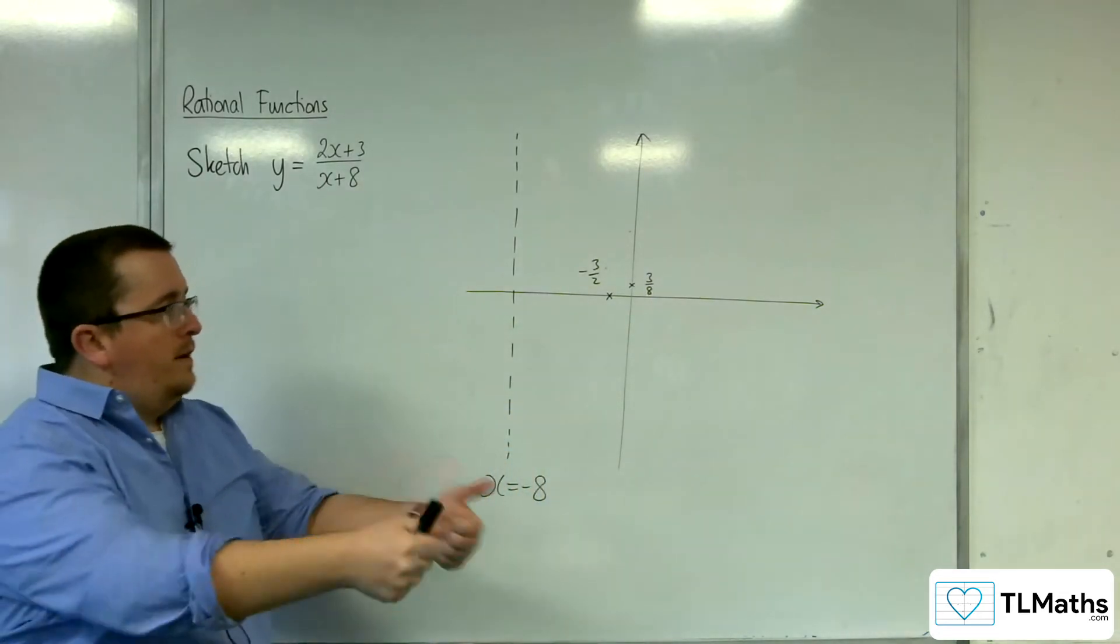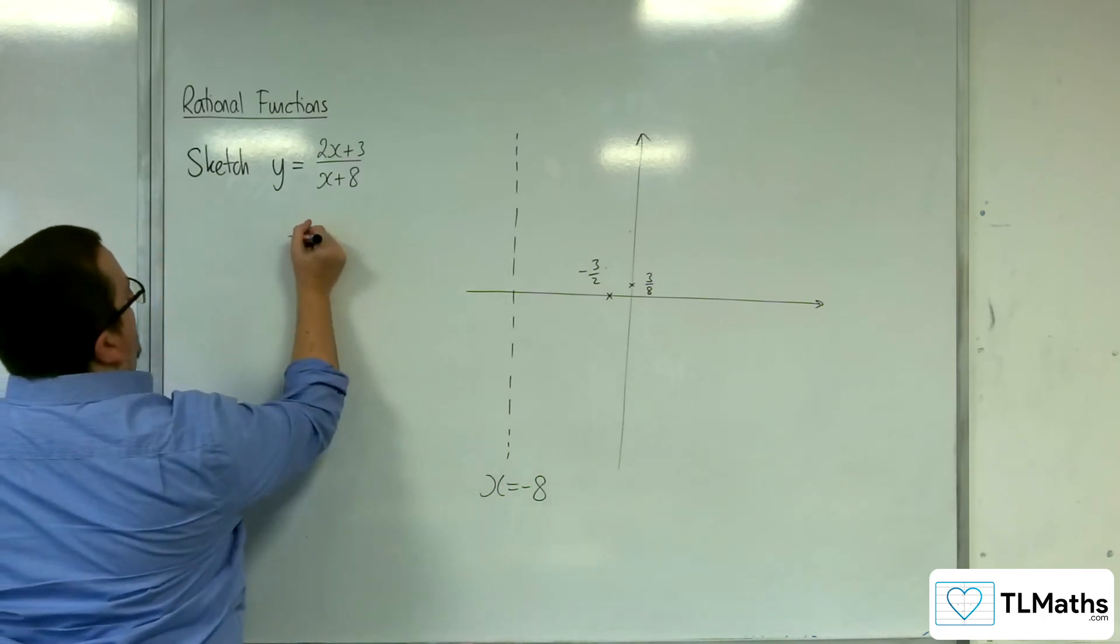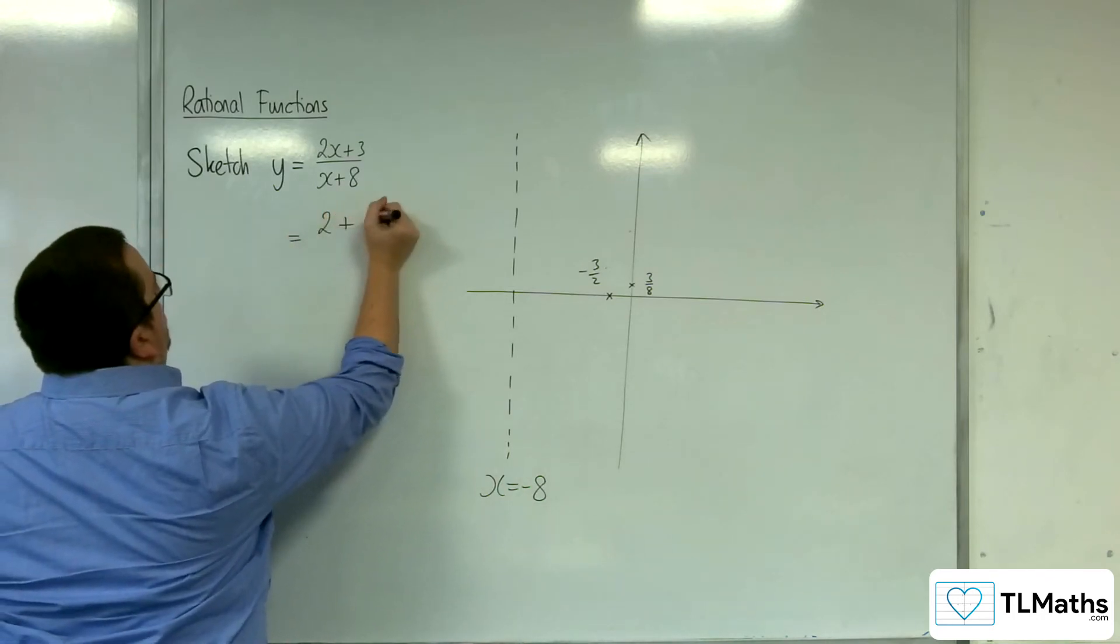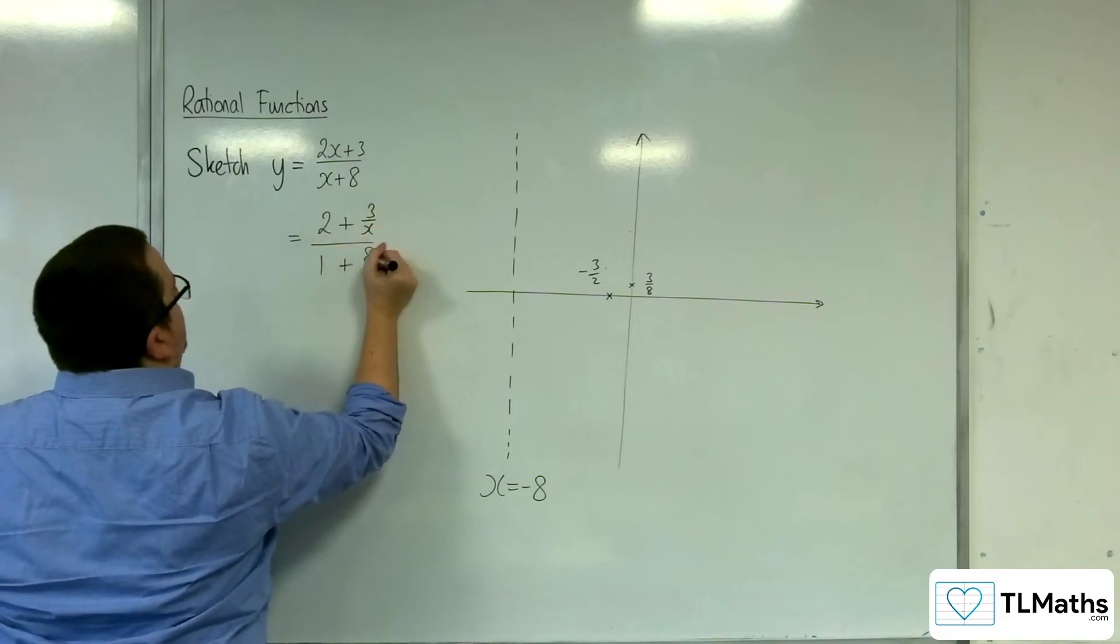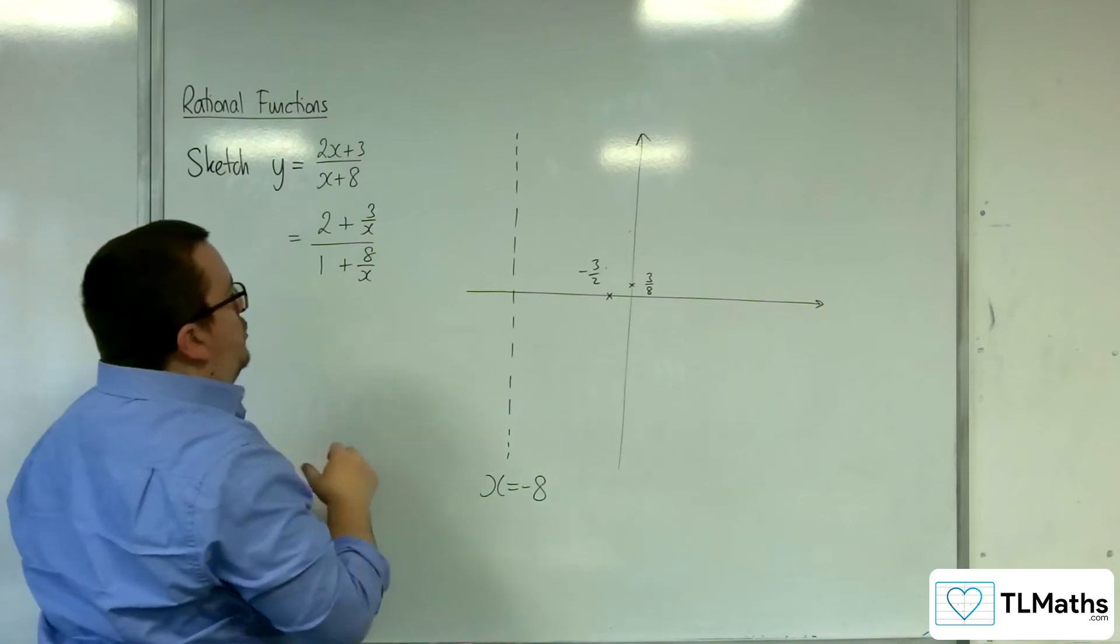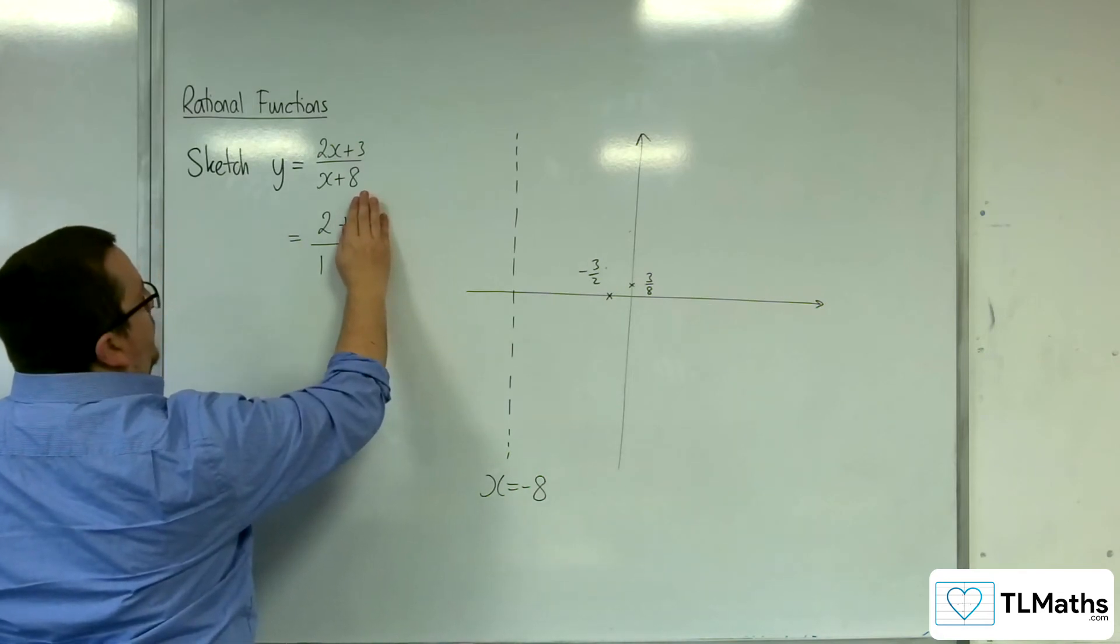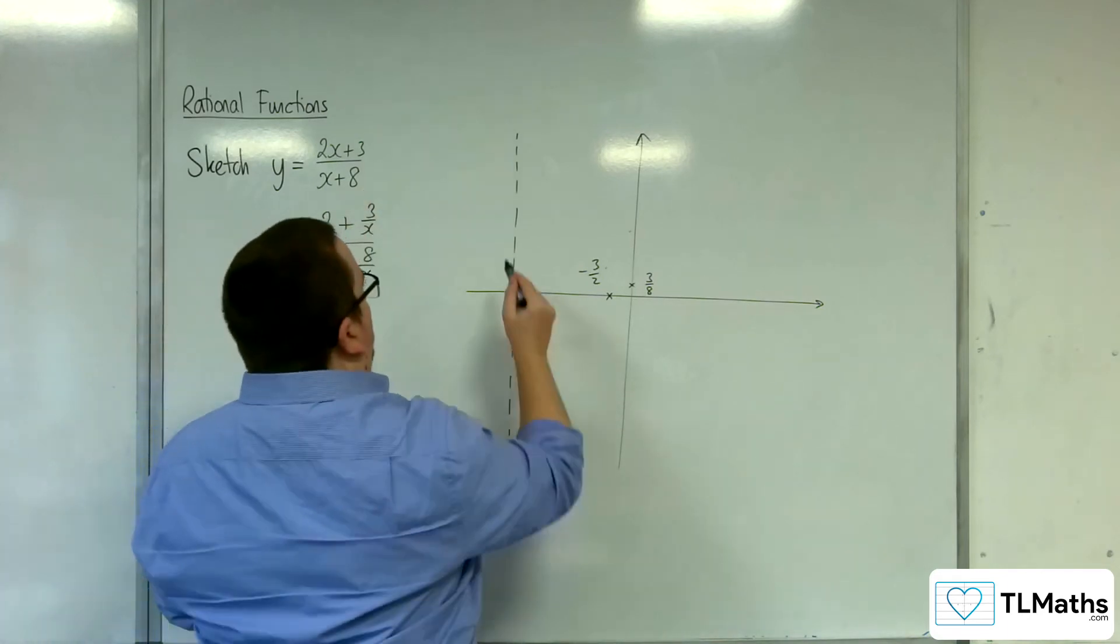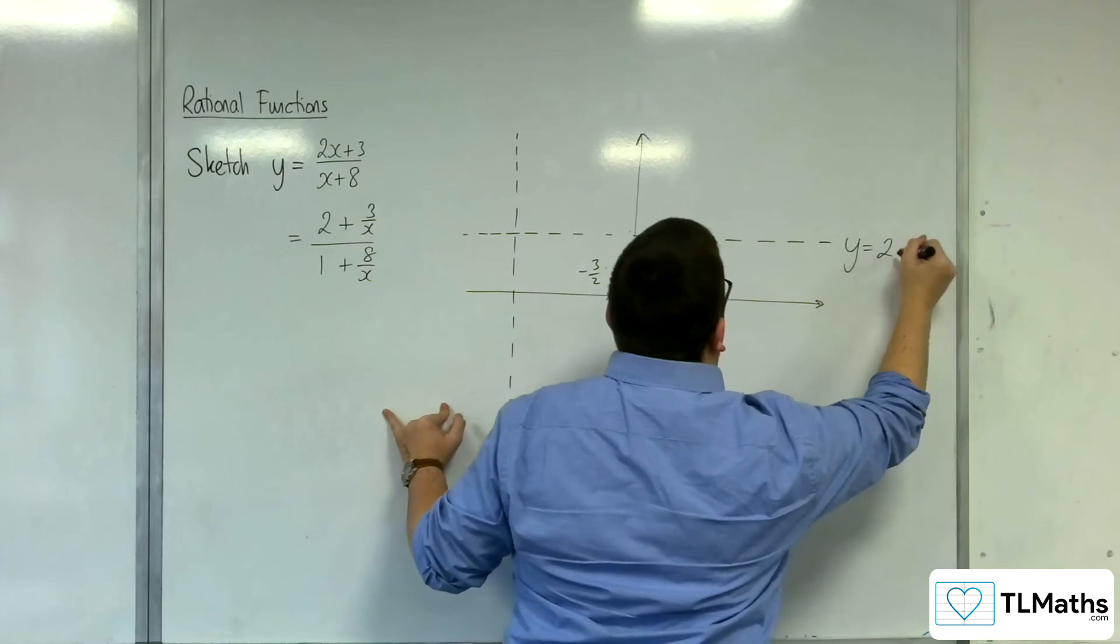And also then, where is the horizontal asymptote? So we're going to divide top and bottom by x. 2 plus 3 over x over 1 plus 8 over x. And so as x gets larger and larger in either direction, those fractions are going to go to 0, and so we've got y equals 2 over 1. So y equals 2 is a horizontal asymptote.